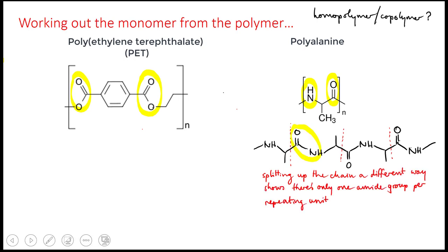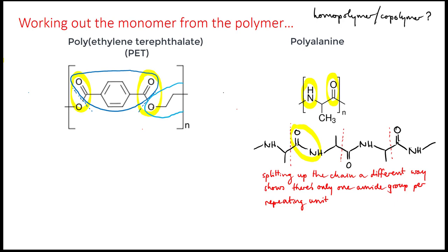With the PET, if it's a copolymer, then it must have started with a diacid and a dialcohol, or diol. Looking at the ester groups, we can split them down the middle, because that's where the links were made between the monomers. The chunk attached to the carbonyl groups was originally a diacid, and the chunk with the single-bonded oxygens was originally the diol. So these are the monomers that we can draw out of it.